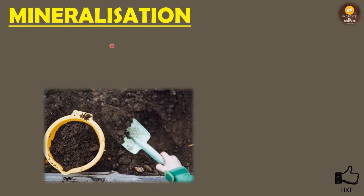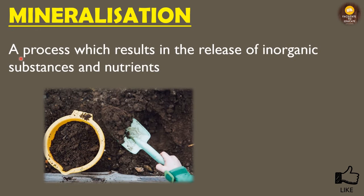The last step is mineralization. This is a process which results in the release of inorganic substances and nutrients — the nutrients required by plants for photosynthesis — into the soil. It's important to note that mineralization, catabolism, and humification occur simultaneously; they do not occur strictly one after the other, even though we read them in sequence.